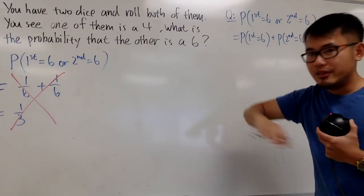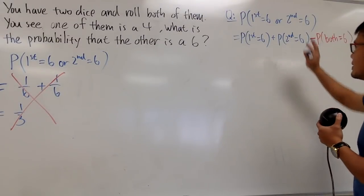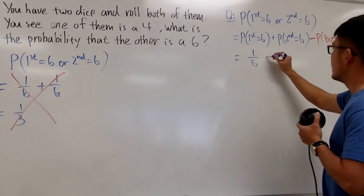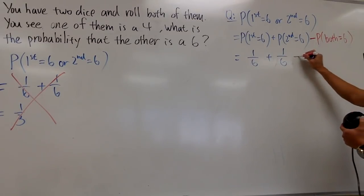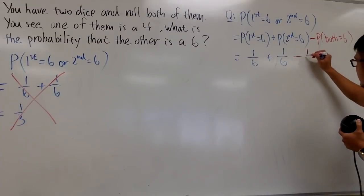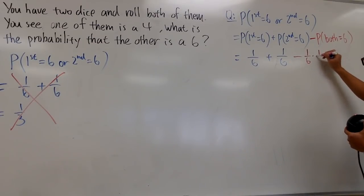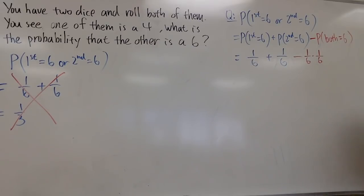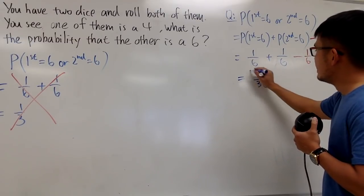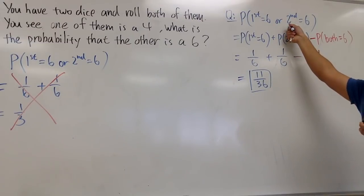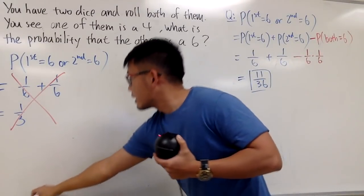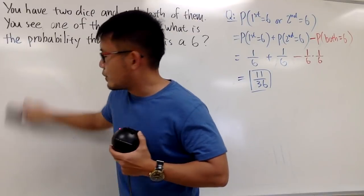Once again, the earlier approach was wrong because we didn't do this subtraction step. These are totally two different questions, and you will see why we need this later. The probability that the first one is a 6 is 1 over 6, and this one is also 1 over 6. The probability that both dice come out to be a 6 is 1 over 6 times 1 over 6. Working this out, you end up with 11 over 36. This is the answer when we don't know about the 4 at all.